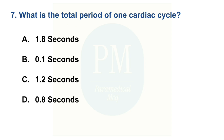What is the total period of one cardiac cycle? Option A: 1.8 seconds. Option B: 0.1 second. Option C: 1.2 seconds. Option D: 0.8 seconds. The correct option is Option D: 0.8 seconds.